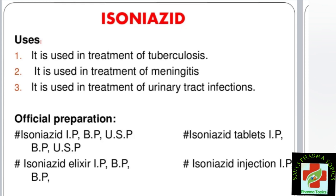Official preparations of isoniazid include: isoniazid tablet under Indian Pharmacopoeia, British Pharmacopoeia, and United States Pharmacopoeia; isoniazid elixir — a hydroalcoholic solution under Indian and British Pharmacopoeia; and isoniazid injection. So the forms are tablet, elixir, and injection.